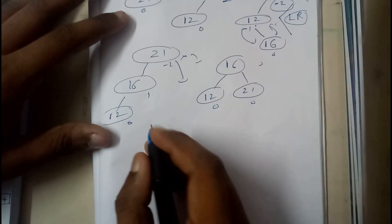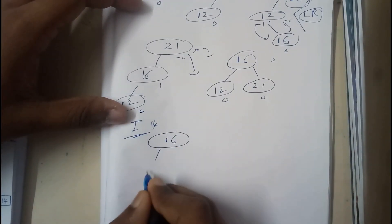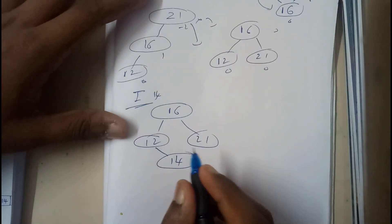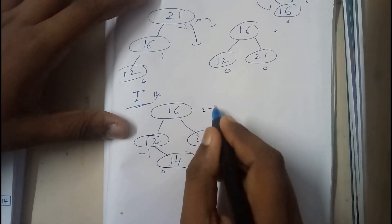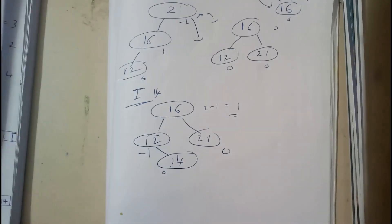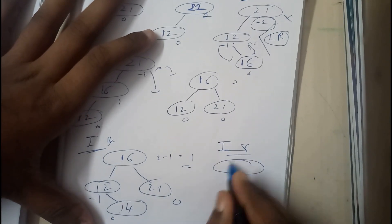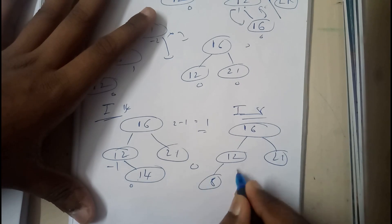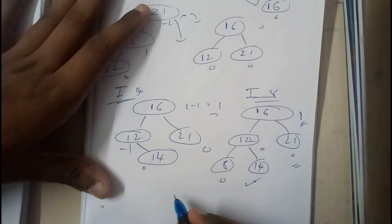Insert 14: with the tree 16, 12, 21 — 14 is greater than 12, so it goes to the right of 12. Balance factors are zero, zero, one — it satisfies the AVL property. Insert 8: 8 is less than 12, so it goes to the left of 12. Balance factors become zero, zero, zero, then two, one, zero — still satisfying the AVL property.